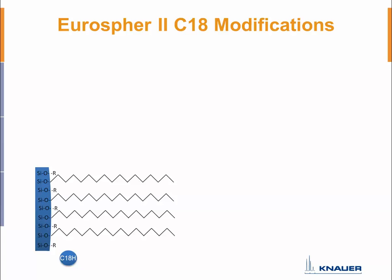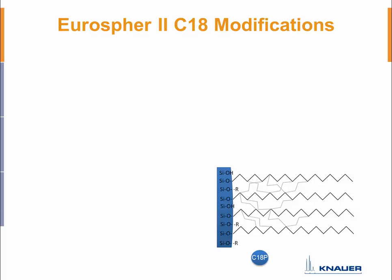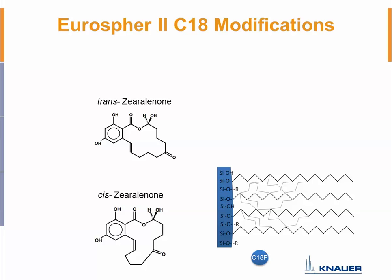The C18H phase is really nonpolar, so it is suited to nonpolar analytes — for example, a molecule like NOP, which has long nonpolar chains. The C18H can also be used in an extended pH range due to its high stability. The C18P is also pH stable and has excellent steric selectivity because the chains are densely packed and cannot collapse easily. This means very similar molecules can be separated on a C18P phase based on small steric differences — something that cannot be done on a classical C18 phase.